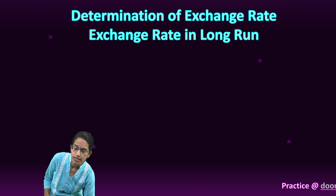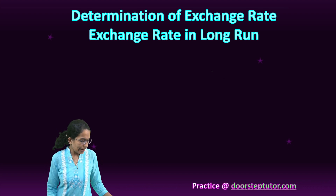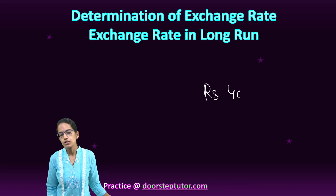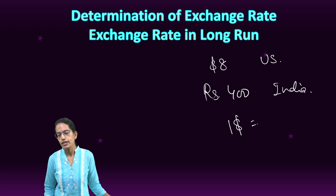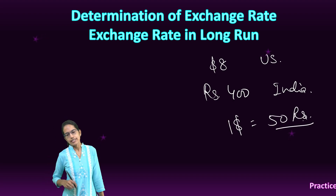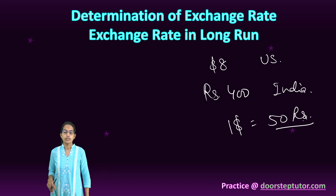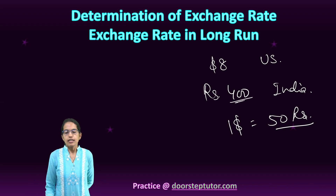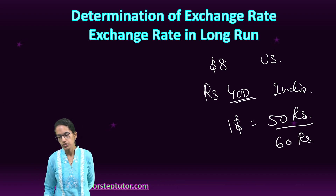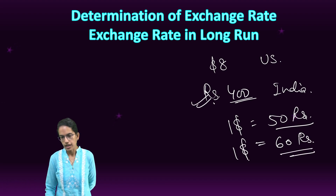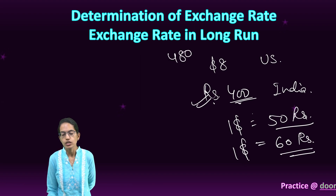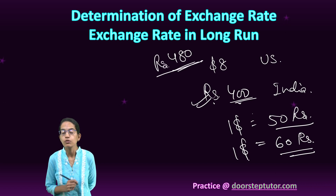The next is how exchange rate affects the scenario in the long run. Take a simple example: you buy a shirt for Rs. 400 in India, and for the same shirt you are paying $8 in the United States, because $1 equals 50 rupees. Now, let's say the exchange rate changes and the currency depreciates, so $1 becomes 60 rupees. The same shirt that you purchase in India for Rs. 400 would now cost nearly Rs. 480 in the United States.